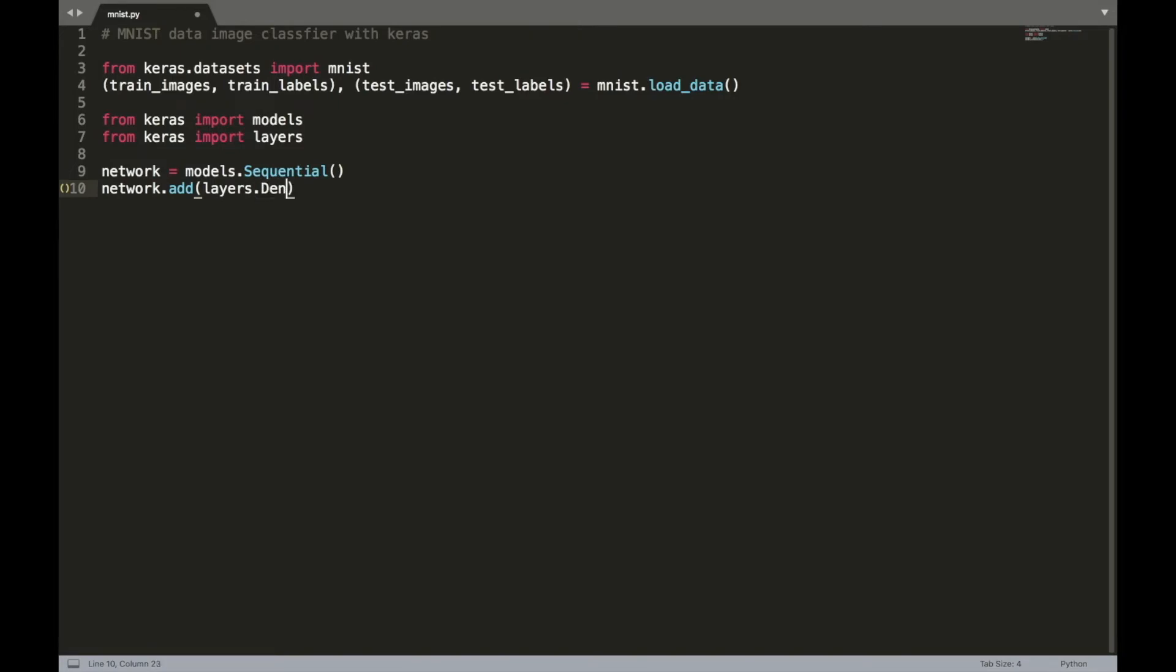The first layer has 512 nodes. It uses the activation function Rectified Linear Unit and it has an input shape 784 dimensional vector.